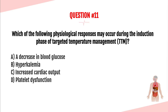Question number eleven. Which physiological response may occur during the induction phase of targeted temperature management (TTM)? Is it A, a decrease in blood glucose; B, hyperkalemia; C, increased cardiac output; or D, platelet dysfunction? The answer is D — platelet dysfunction, due to altered coagulation that occurs at lower body temperatures.